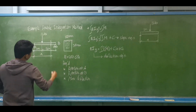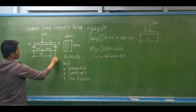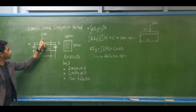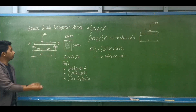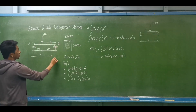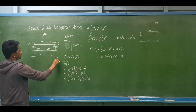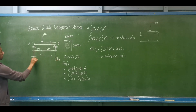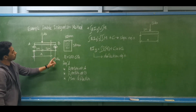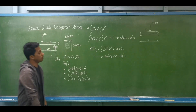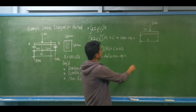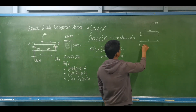What are the support reactions? We need them. Taking moments: 12 times 1 divided by 3 gives us reaction at B equal to 4 kilonewtons. By summation of vertical forces, reaction at A equals 12 minus 4, which is 8 kilonewtons.